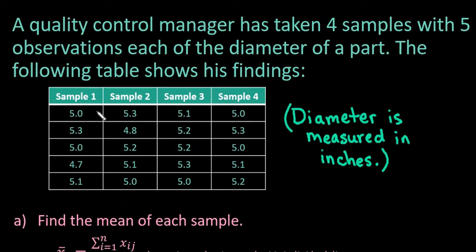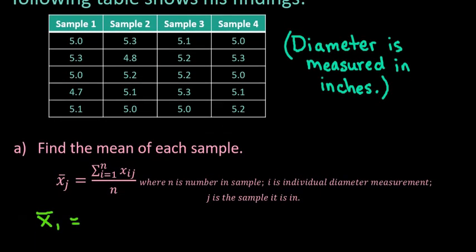What we have here is sample one — these are all of the diameters measured for that specific sample — then sample two, sample three, and sample four. The formula we use to find the mean of each individual sample is the sum of all values in each individual sample, which is what Xij stands for. The i stands for the individual diameter measure, and j is the sample it's taken from. So X-bar-j would be X-bar-one, X-bar-two, X-bar-three — the mean of each individual sample.